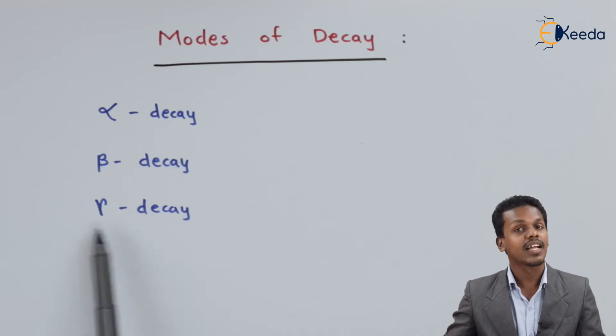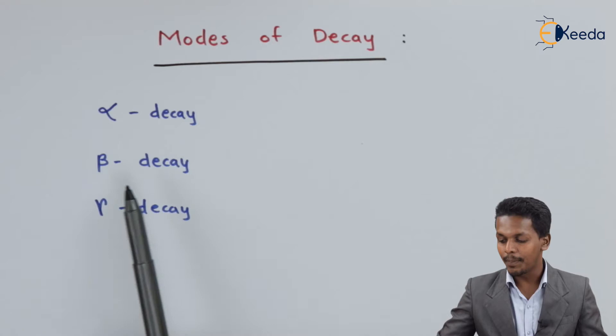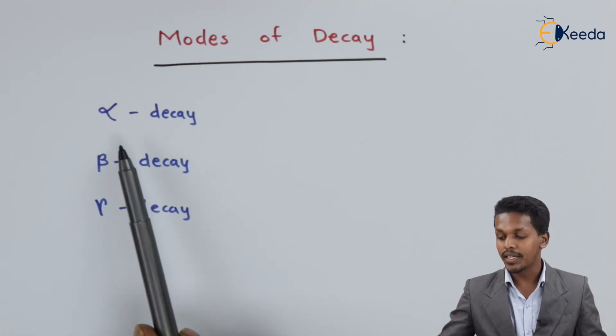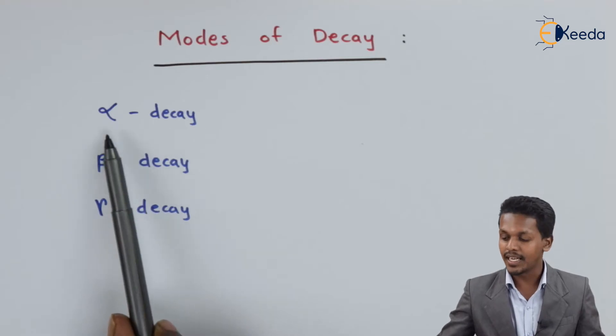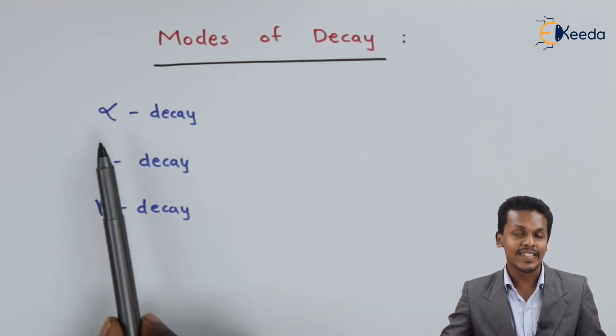beta decay and gamma decay. We have different topics based on alpha decay, beta decay and gamma decay. But here let me talk briefly regarding alpha, beta and gamma decay. So starting with the first one, that is alpha decay.